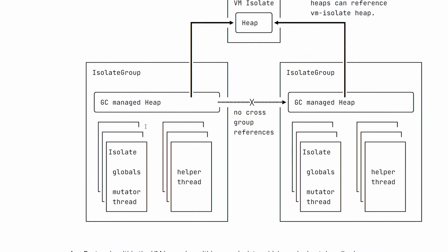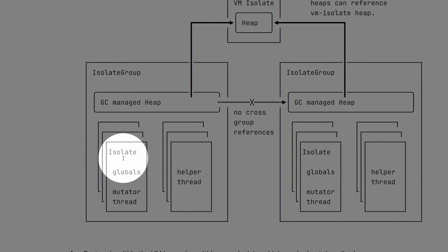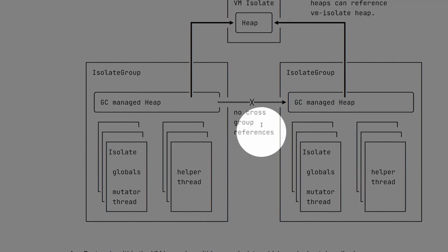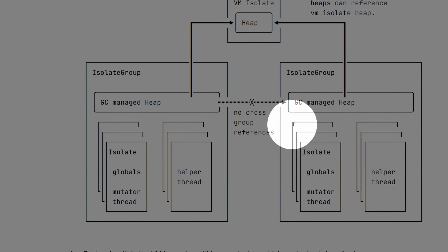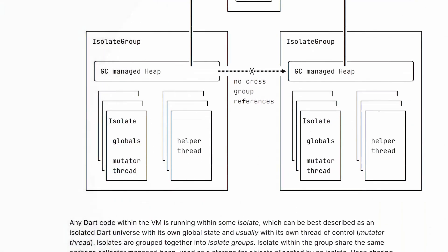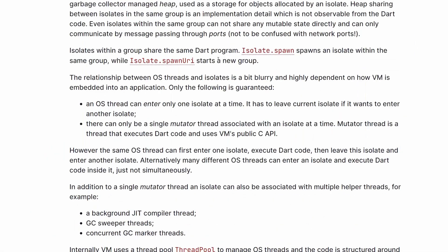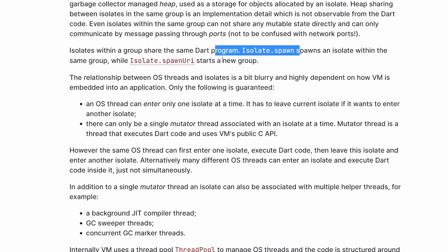So this isolate group over here will have one isolate, and you can spawn another isolate with the URI method — it will create another isolate group. Then in this isolate, you can create another isolate that will sit in this group with the spawn method. By the way, in Flutter we do not have access to the isolate.spawnUri method, so we can only spawn isolates within one group.